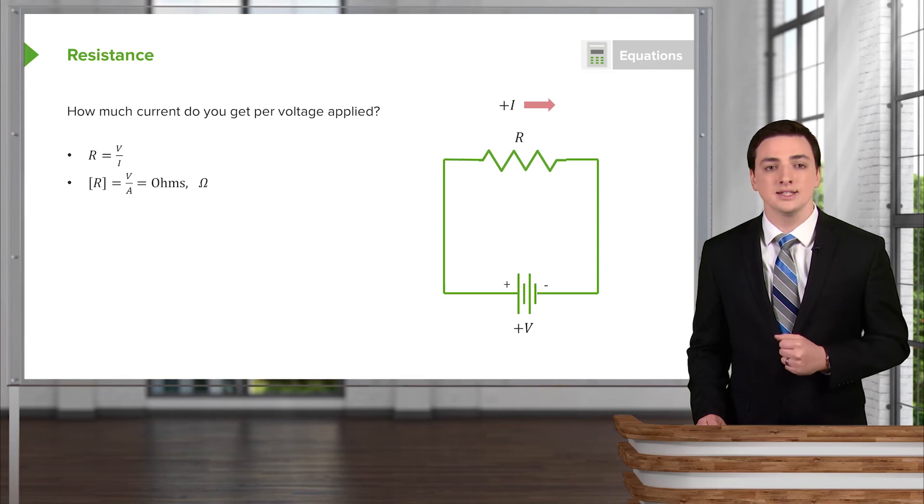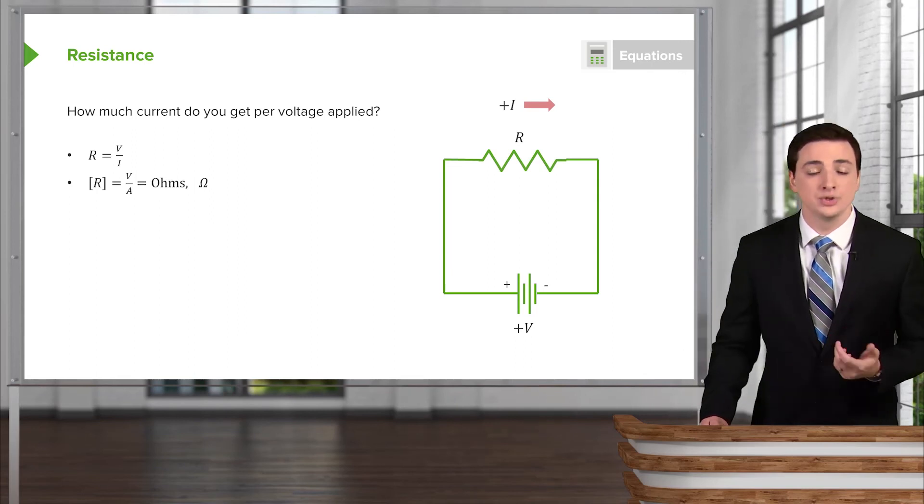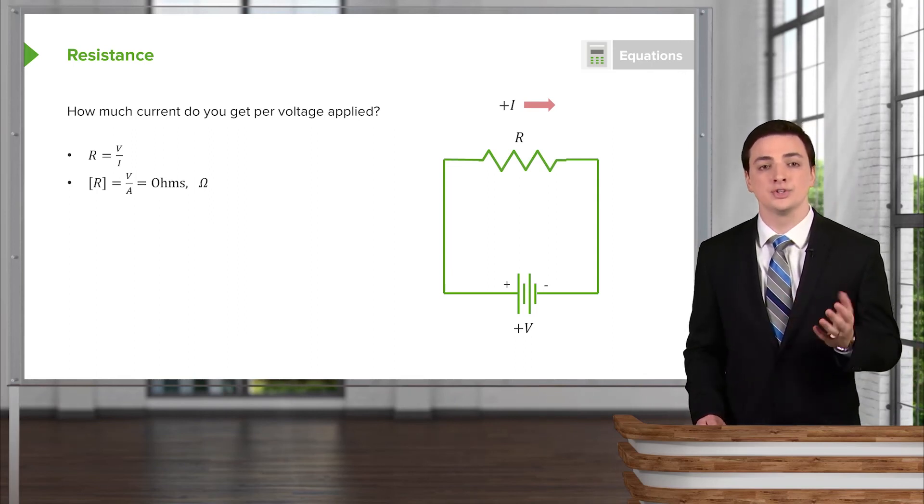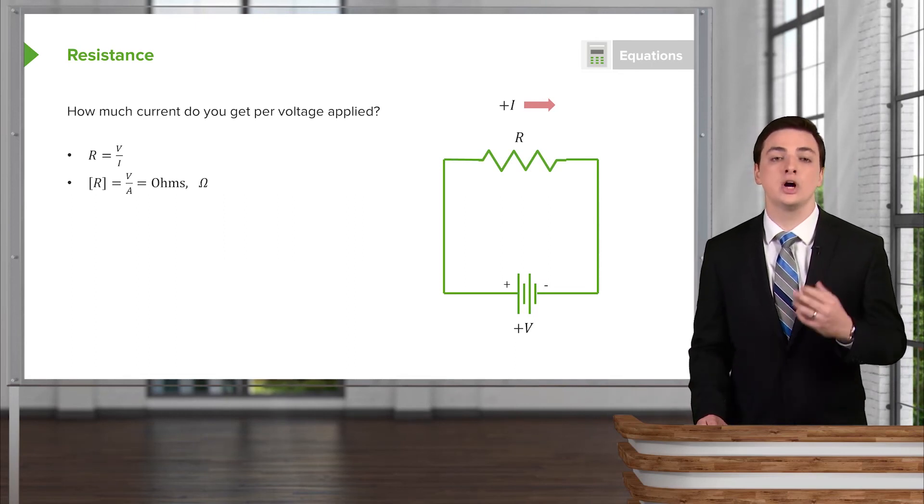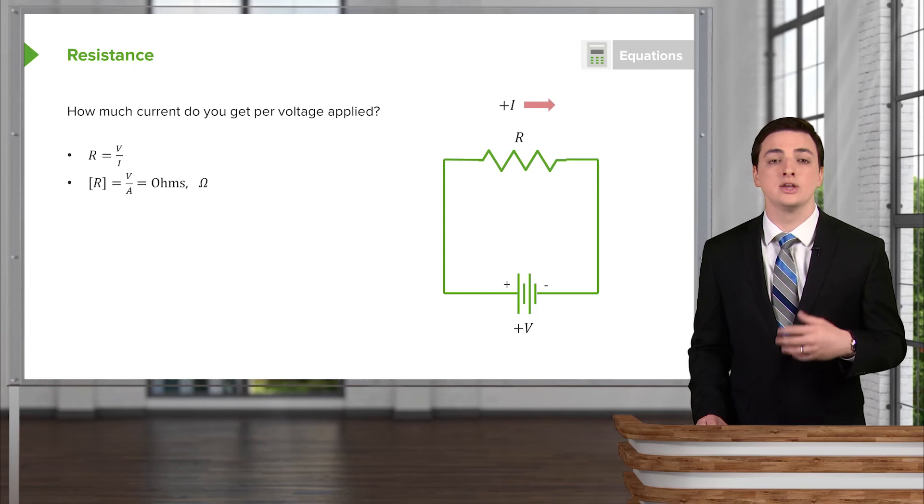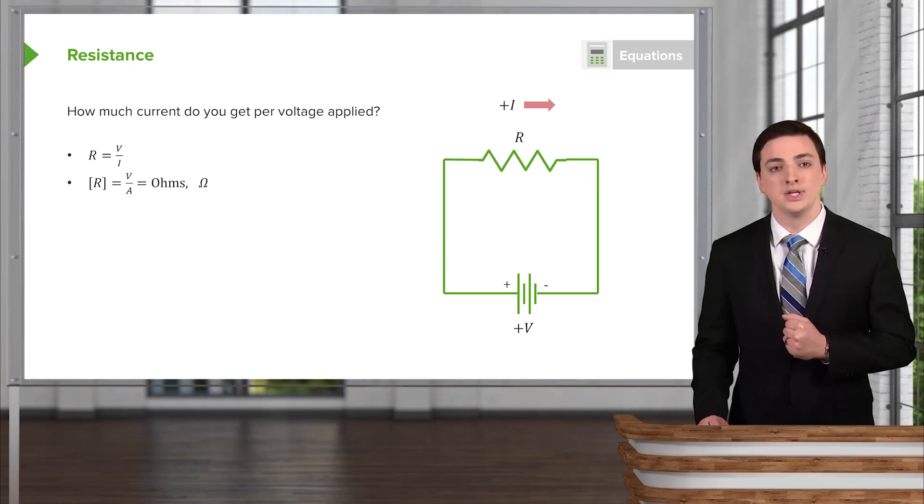The resistance, this quantity that we've just introduced, has units of volts per amp, since it is the voltage divided by the current. So we call one volt per amp an ohm, and it's represented by a capital Greek letter omega, as you see here.